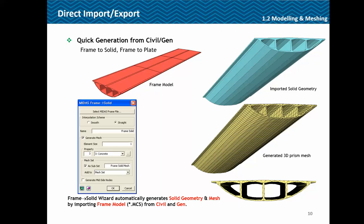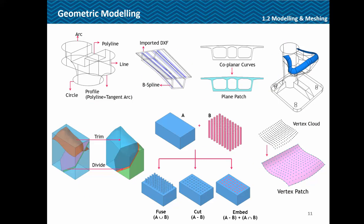In case you want to generate the model directly, we have many features like generating polylines, arcs, and so on. You can import from DXF, and if you have a balanced cantilever bridge with varying section profiles, that kind of thing can be connected by loft. From curves to plain faces is also possible. For solids, we have basic things like trim and divide and boolean operations like fuse, cut, and embed. From a vertex cloud you can also generate a surface patch.